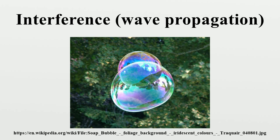If the difference between the phases is intermediate between these two extremes, then the magnitude of the displacement of the summed waves lies between the minimum and maximum values. Consider, for example, what happens when two identical stones are dropped into a still pool of water at different locations. Each stone generates a circular wave propagating outwards from the point where the stone was dropped. When the two waves overlap, the net displacement at a particular point is the sum of the displacements of the individual waves.